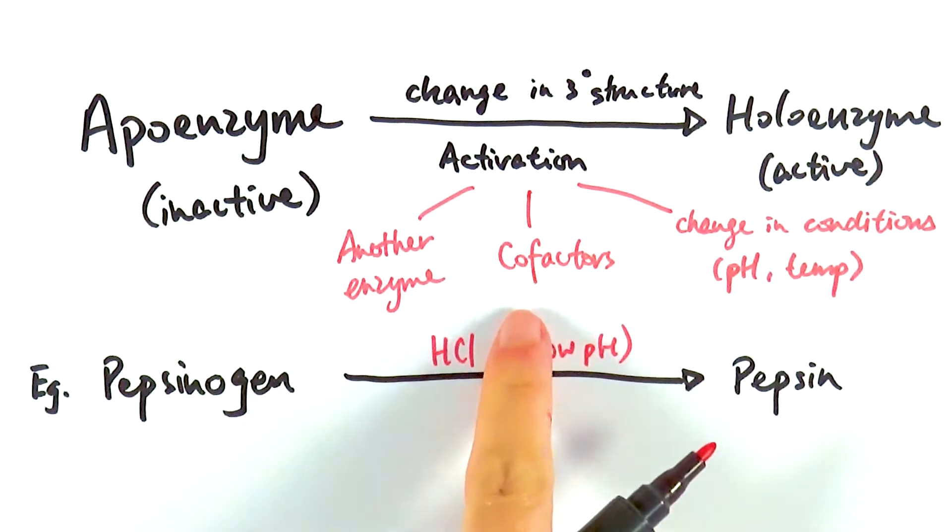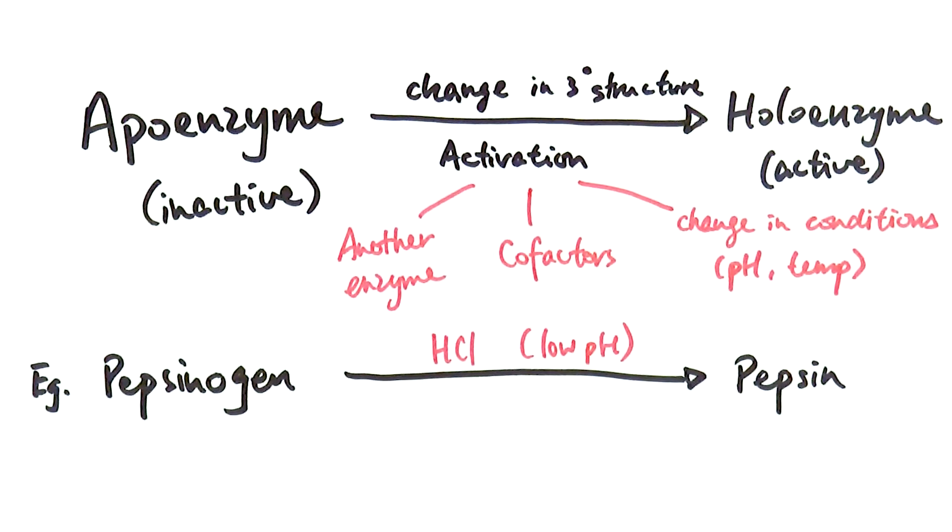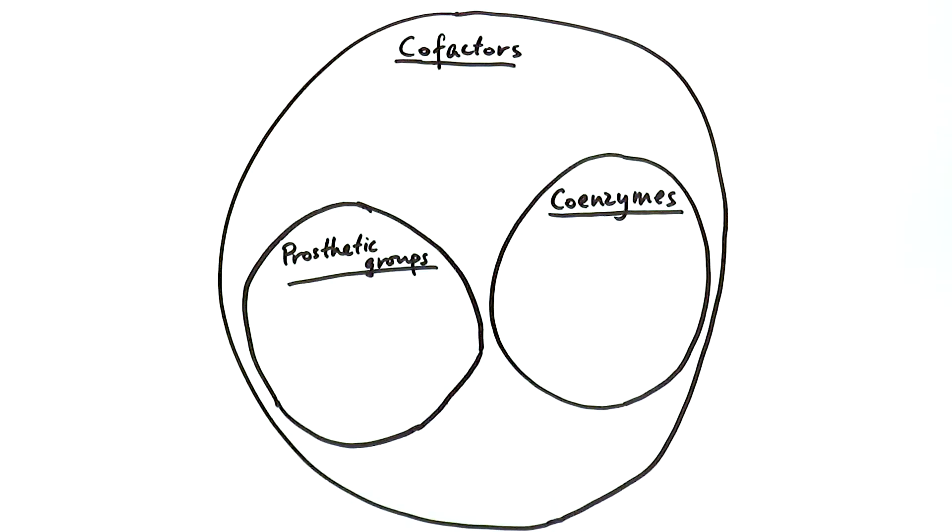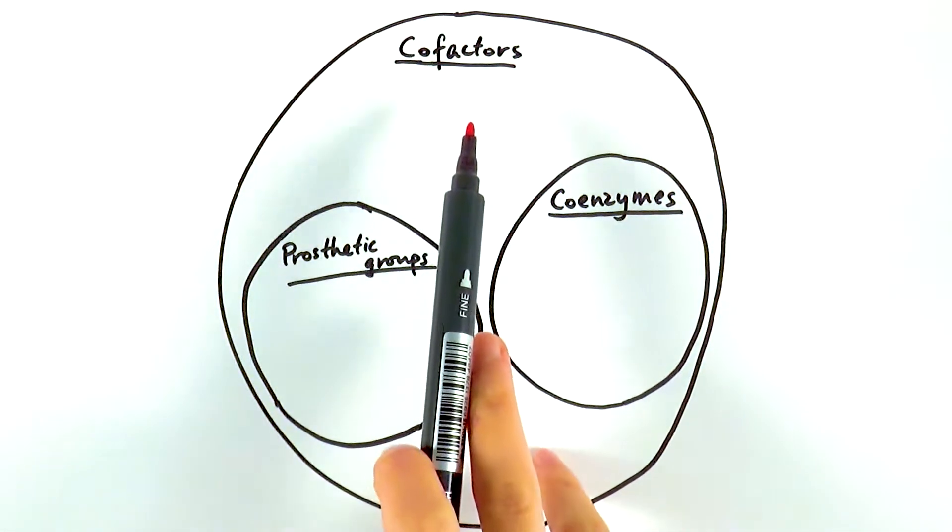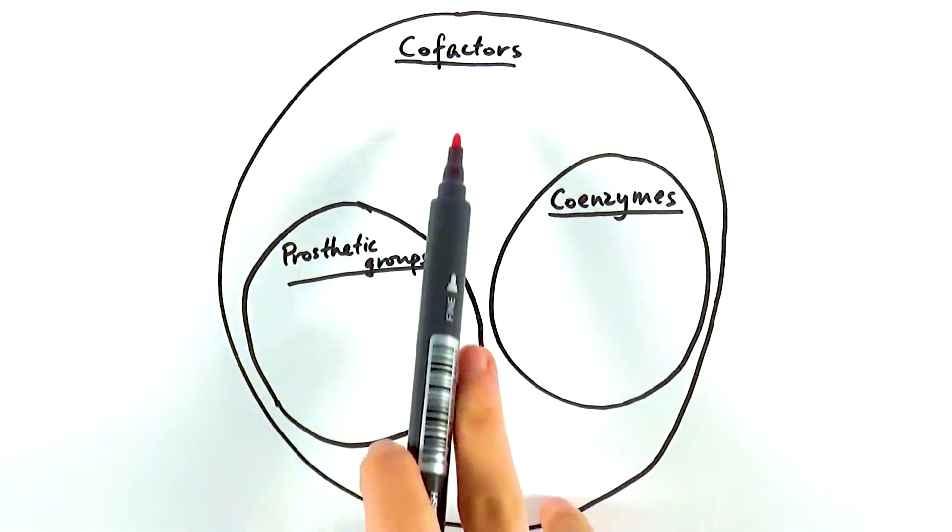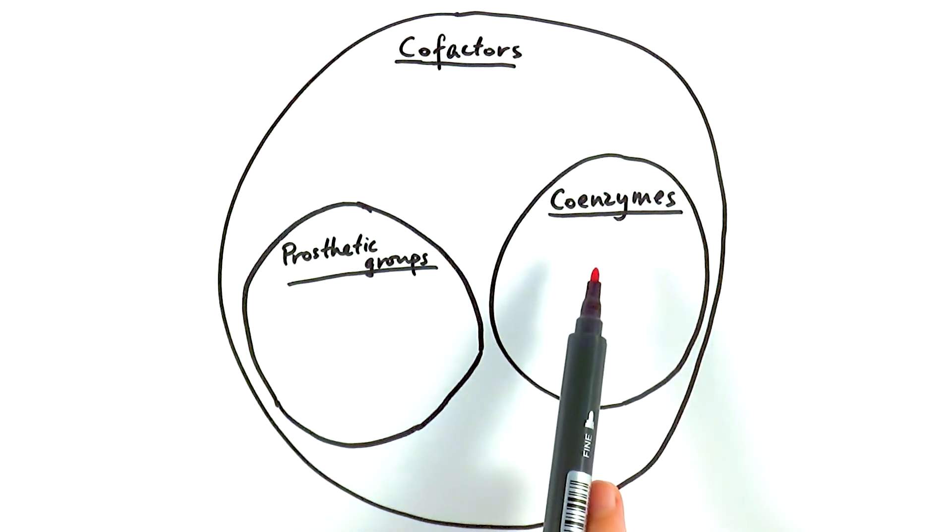What we'll do now is to think about what are the different types of cofactors and some of the examples that you need to be aware of. In this diagram, it kind of summarizes how we can classify different types of cofactors. The reason I'm using this particular diagram, rather than using a flowchart or a mind map, is because there are certain chemicals that are classified as cofactors themselves. But then within cofactors, there could be also coenzymes, which are also cofactors but with a slightly different characteristic.